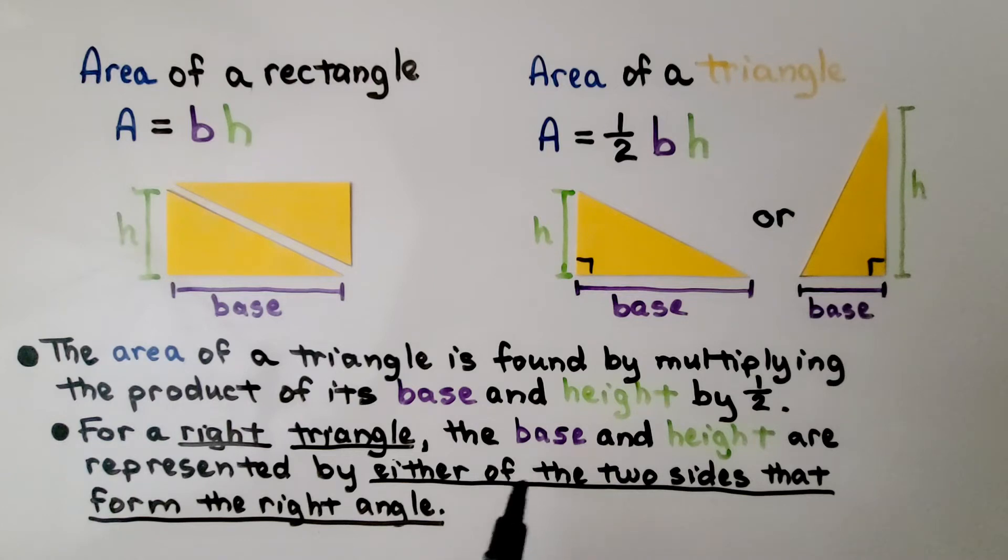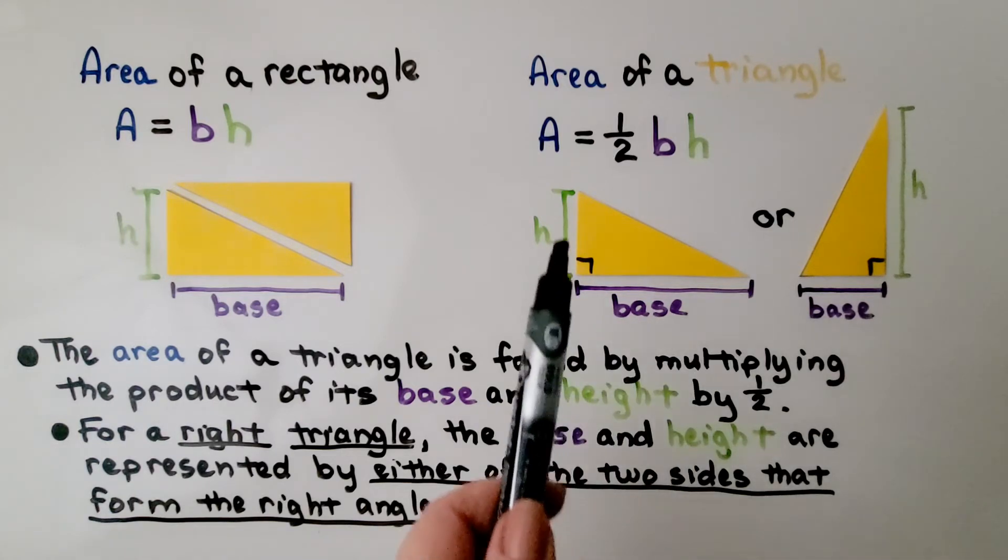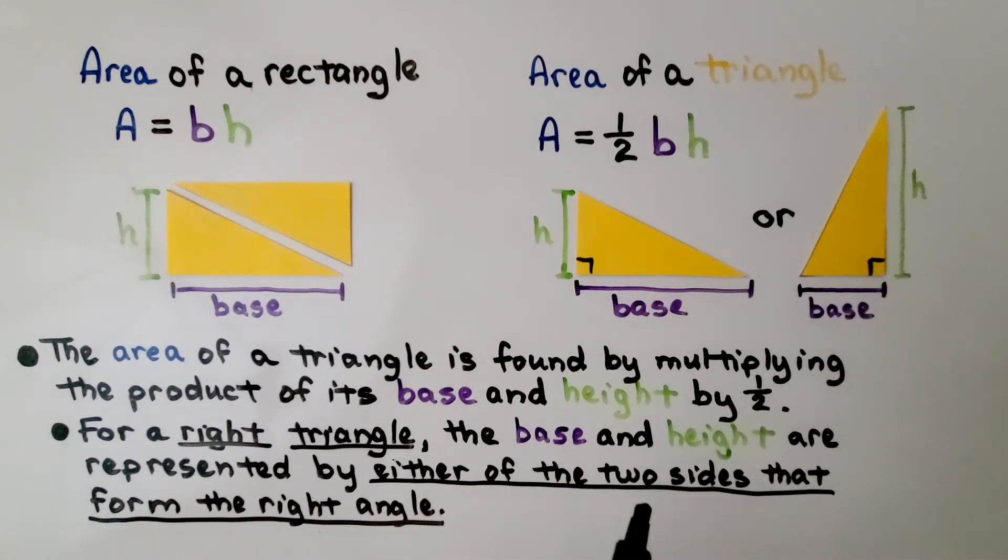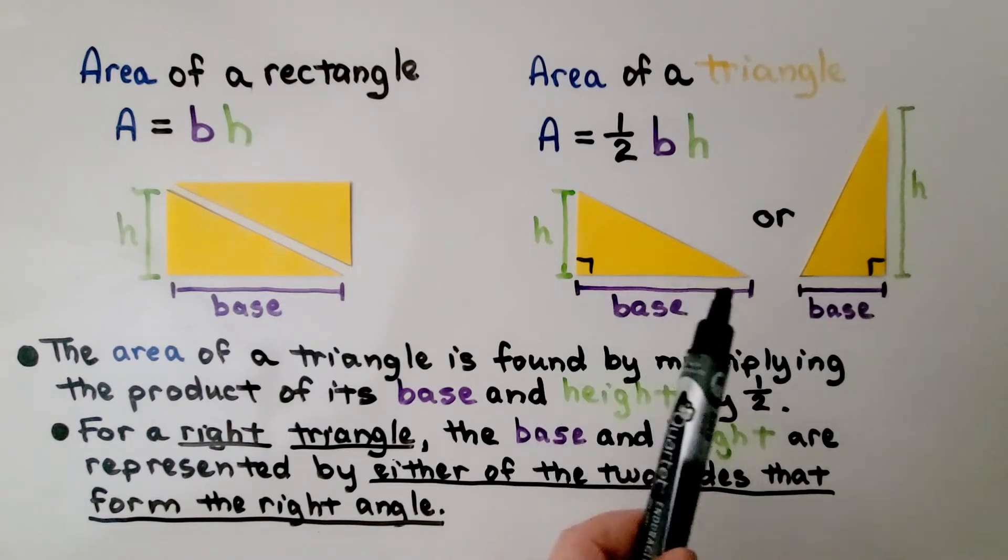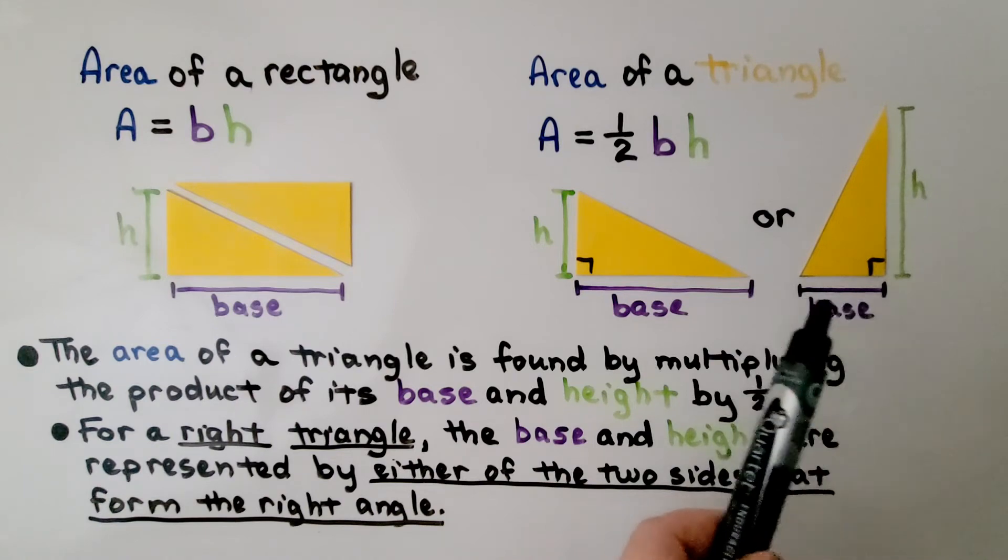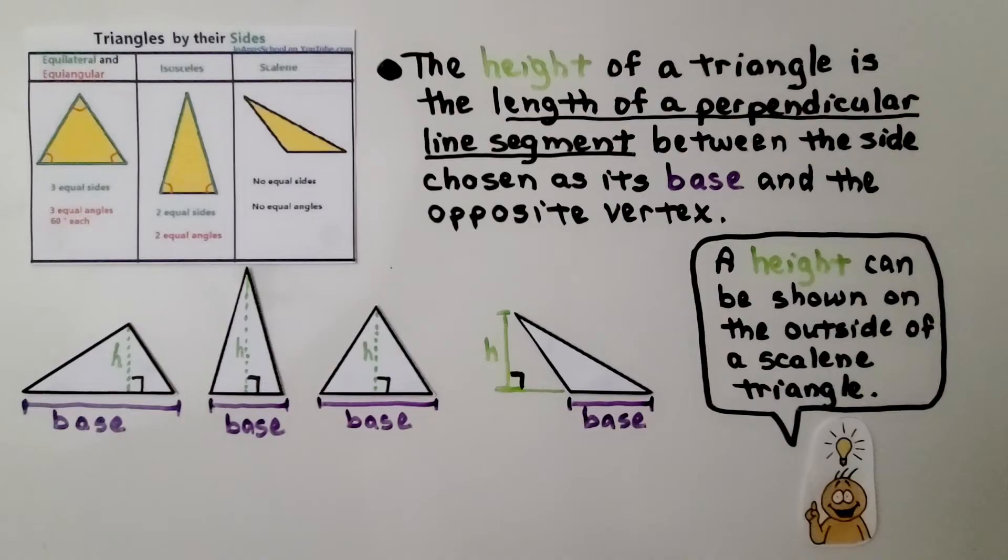For a right triangle, the base and height are represented by either of the two sides that form the right angle. So we can say this long side is the base or we could say the short side is the base and that's the height. The height of a triangle is the length of a perpendicular line segment between the side chosen as its base and the opposite vertex.